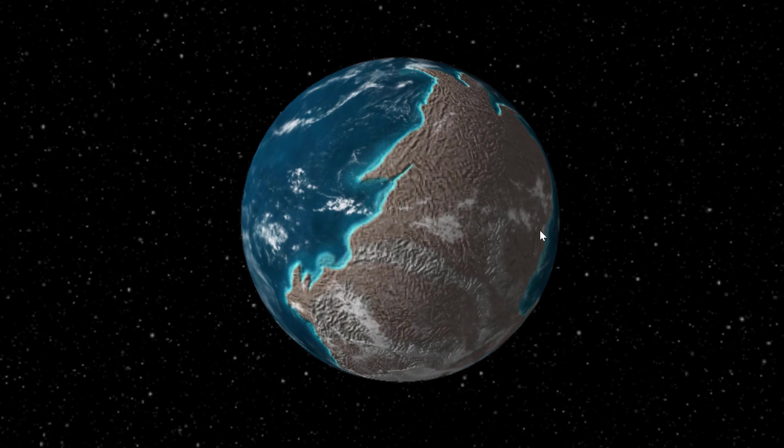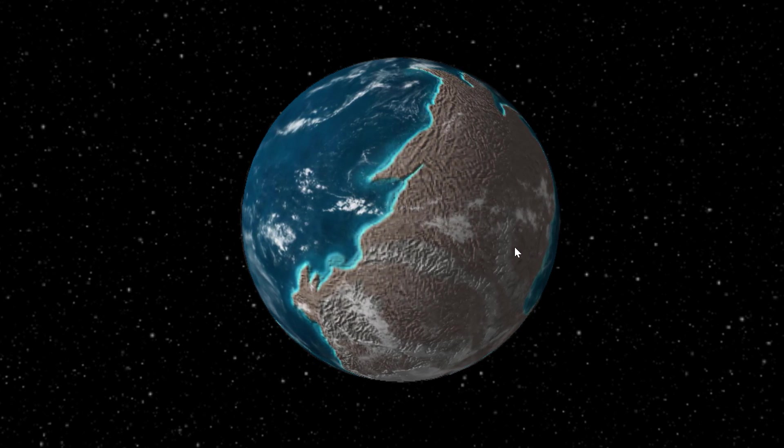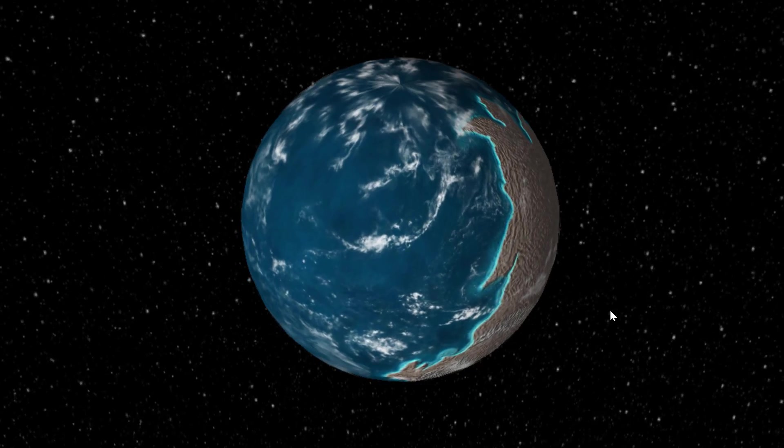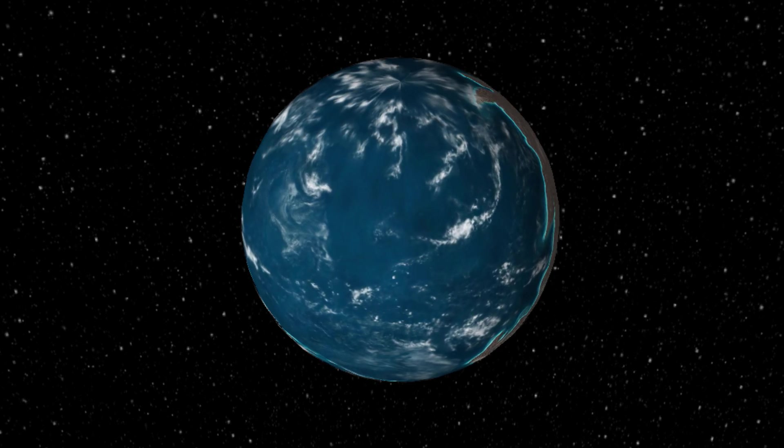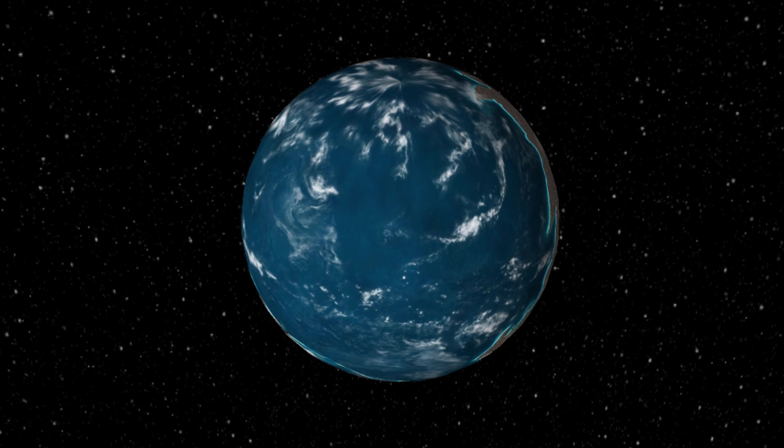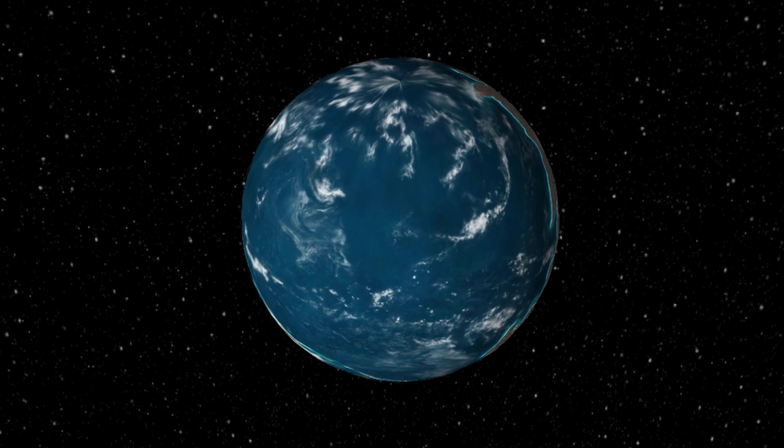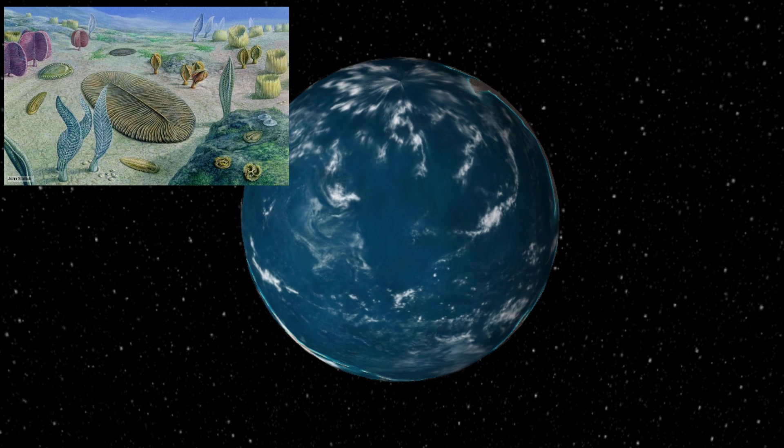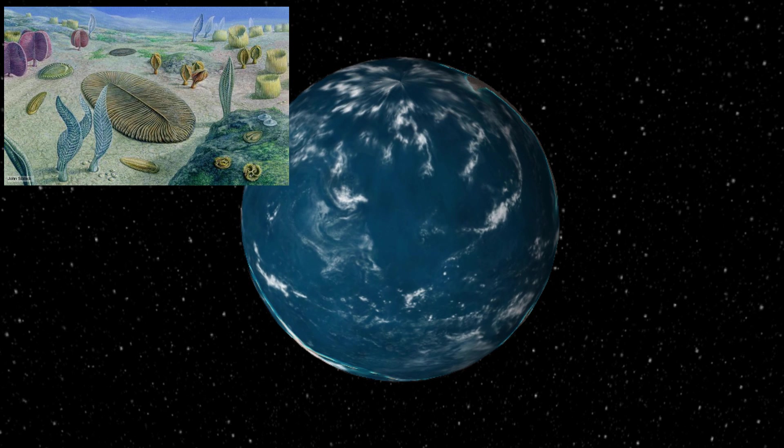Essentially this is what it looked like. There was a very large continent and a very large ocean. This period was known as Ediacaran period when essentially multicellular life started to evolve in the ocean. You had some really cool looking creatures like these guys right here, but they didn't last for very long.